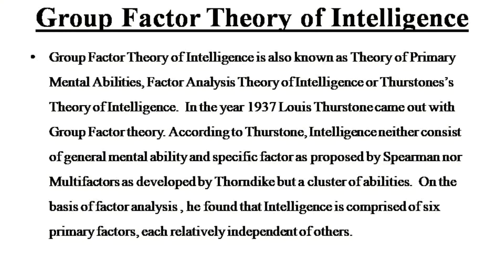Coming to the second theory: group factor theory of intelligence. Group factor theory is also known as the theory of primary mental abilities, factor analysis theory of intelligence, or Thurston's theory of intelligence. In the year 1937, Louis Thurston came out with group factor theory. According to him, intelligence consists neither of general mental abilities and specific factors as proposed by Spearman, nor of multi-factors as developed by Thorndike, but rather a cluster of mental abilities. On the basis of factor analysis, he found that intelligence is comprised of six primary factors, each relatively independent of the others.